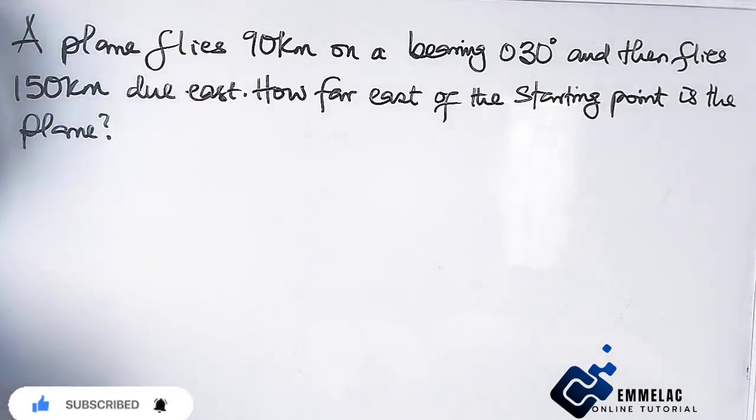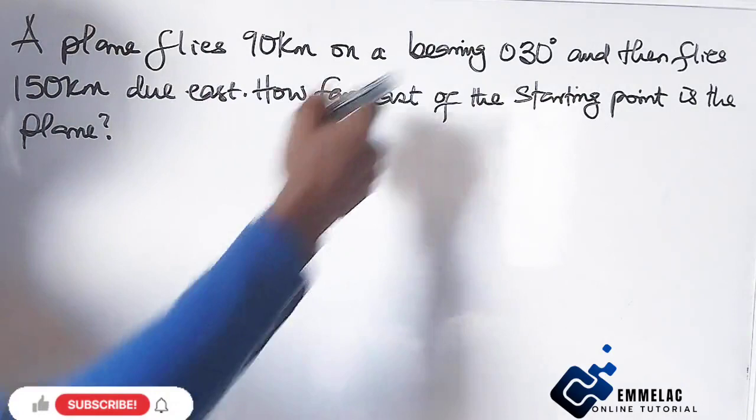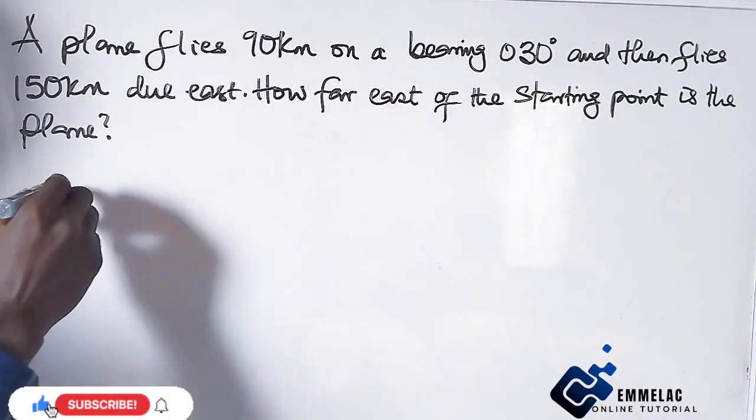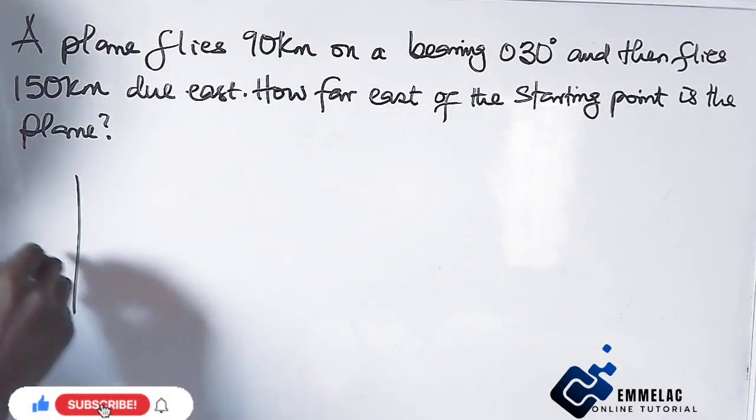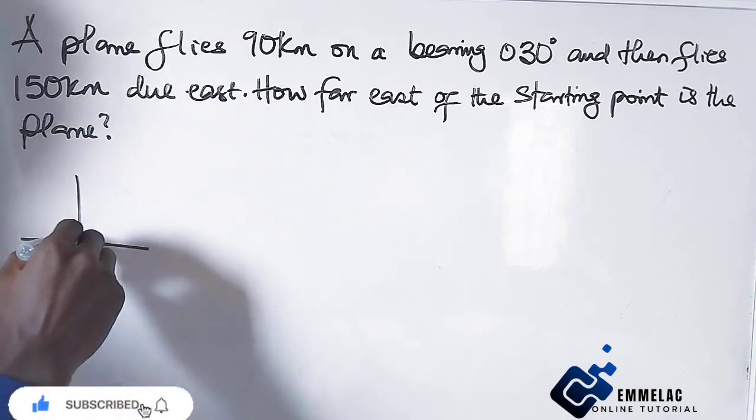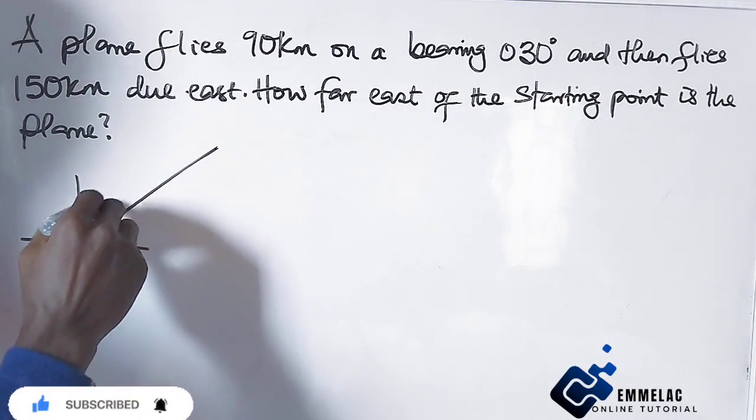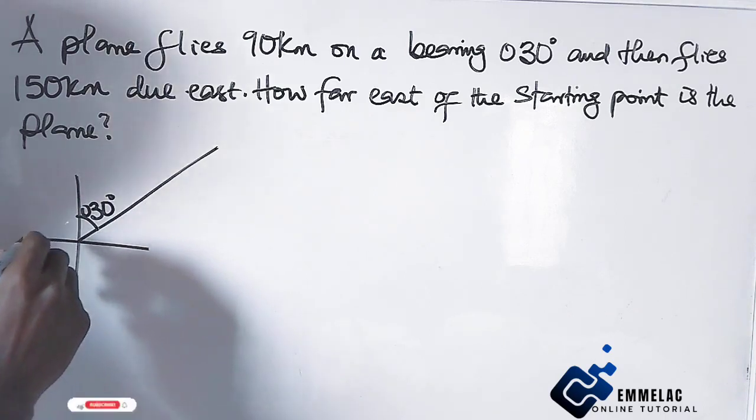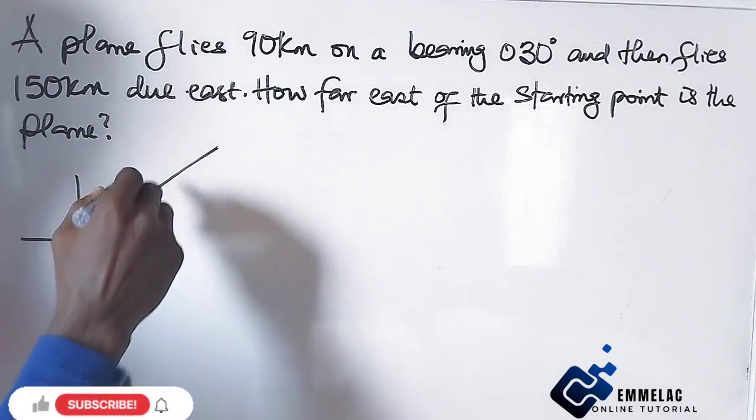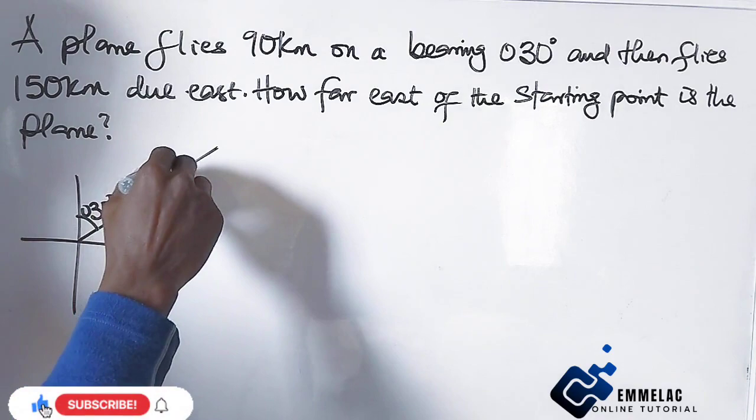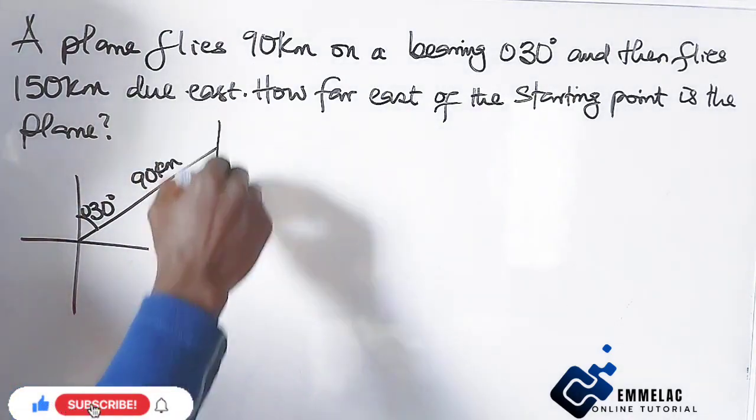First of all, let us draw out the diagram. Now a plane flies 90 km on a bearing of 30 degrees, so here it is on a bearing of 30 degrees. This is 90 km, let us get to this point.